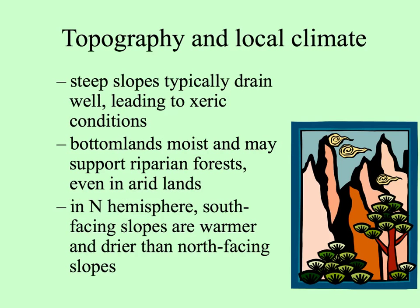Locally, topography can affect climate too. In mountain areas, steep slopes often lead to dry conditions because water runs down quickly, especially with a rain shadow. But the bottoms of mountains tend to be moist and often have rivers and riparian forests, even in very dry places. In the northern hemisphere, if a mountain slope faces south, conditions are warmer than on the north-facing side, and botanists studying flowering plants often see a much longer flowering period with flowers opening much earlier.